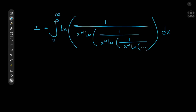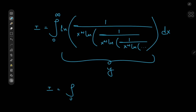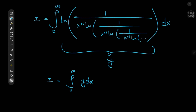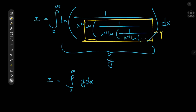How in the name of God are we gonna solve this? Well, let's make our lives easier and compress the entire integrand into something else that I'm gonna call y. So we have the integral i equal to the integral from 0 to infinity of y dx. But this means we're gonna have to define y recursively, because this thing over here is also the y variable. So that means we have y equal to log of 1 divided by x to the n times y.